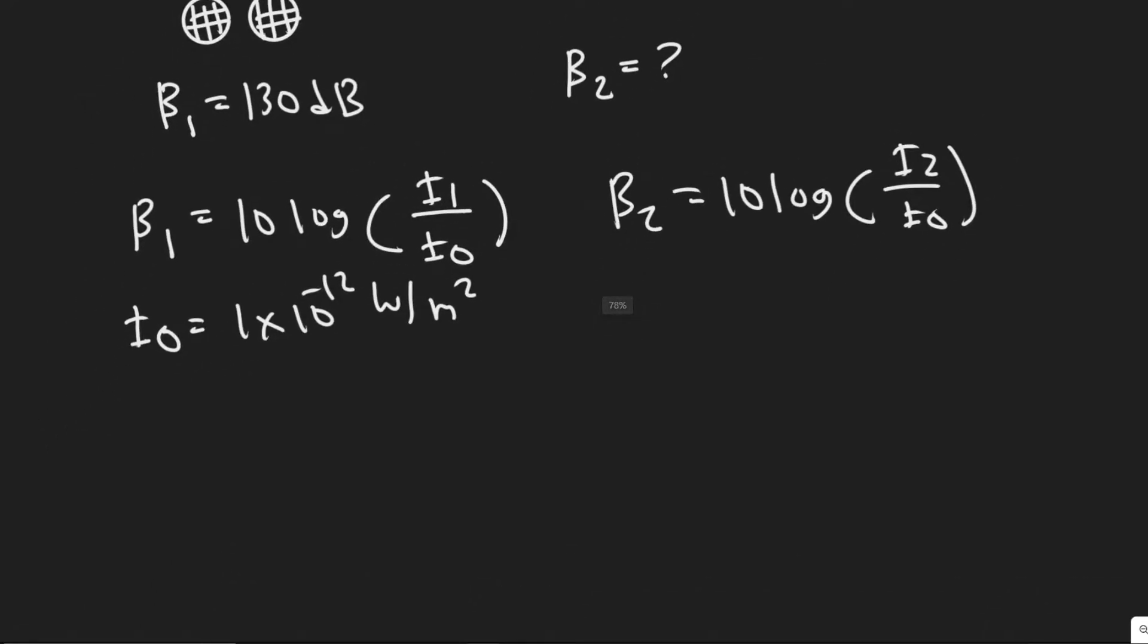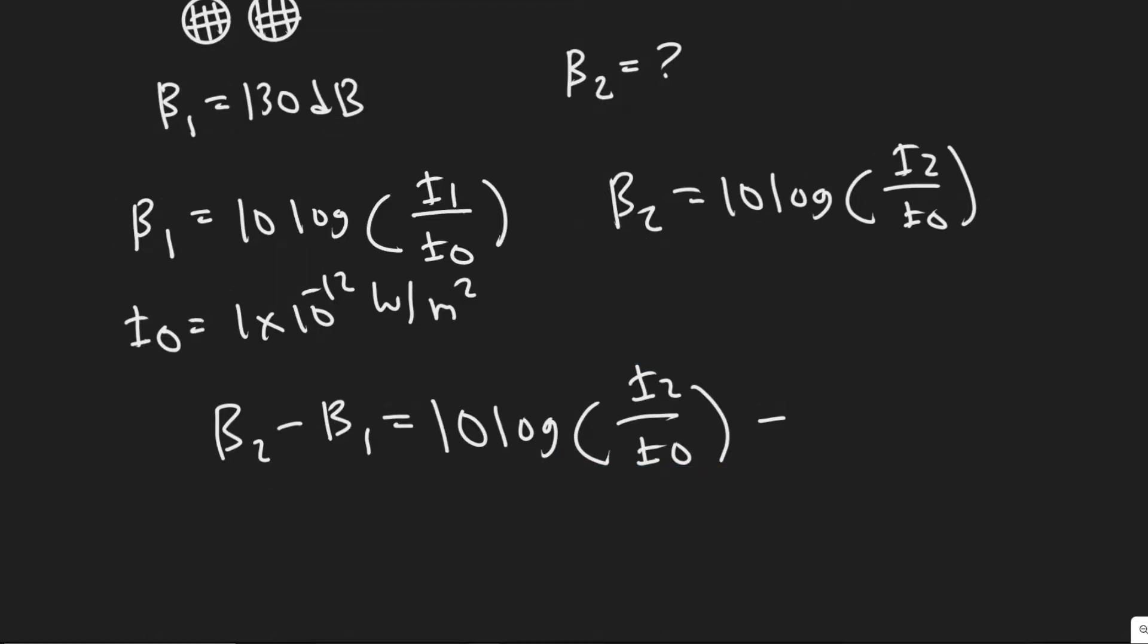The way we're going to do it is by taking β₂ minus β₁ and then we're just going to set this equal to their respective equations minus each other. So 10 log of i₂ over i₀, and then we just minus β₁, so 10 log of i₁ over i₀.